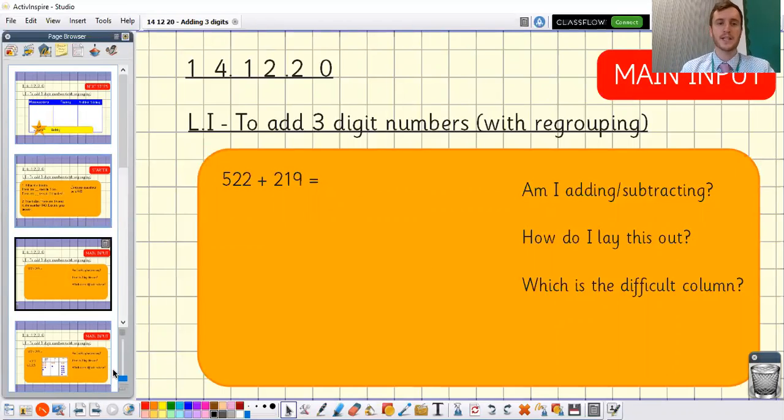Let's move on. So as I said today we're going to continue focusing on adding with regrouping, continuing to add three digit numbers. I've got an example on the board for us to start with today and it says 522 plus 219. Now we've got the same questions on the right hand side today because it's good for us to keep going back to make sure we're recognizing why it's adding, how we lay it out and what's the difficult column.